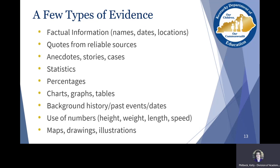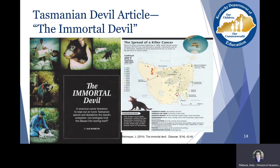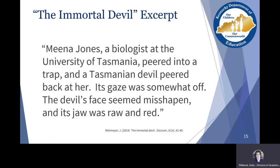We're going to look at an article about the Tasmanian devil called 'The Immortal Devil.' We're going to be looking specifically at how the writer of this article is using evidence throughout the text. We'll start at the very beginning — just the first sentence or two — so you can see how the writer begins this particular article and how specific evidence is used.